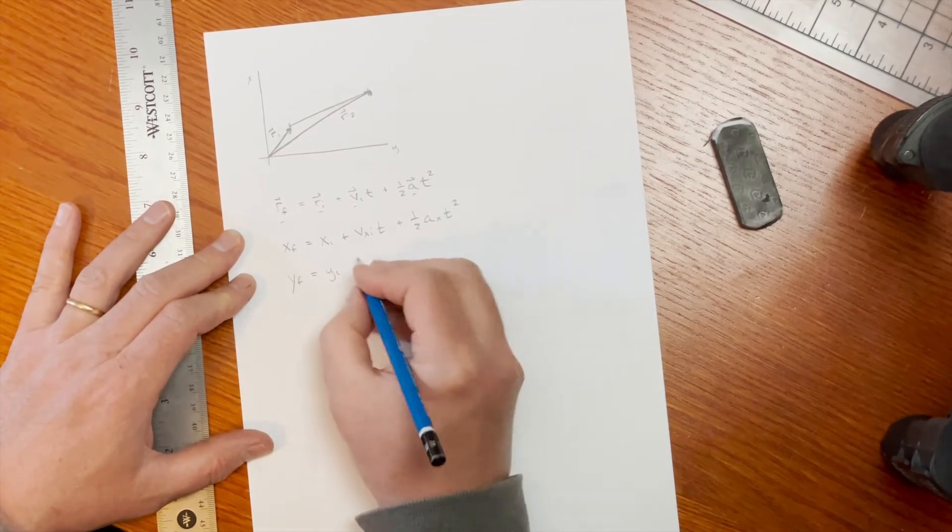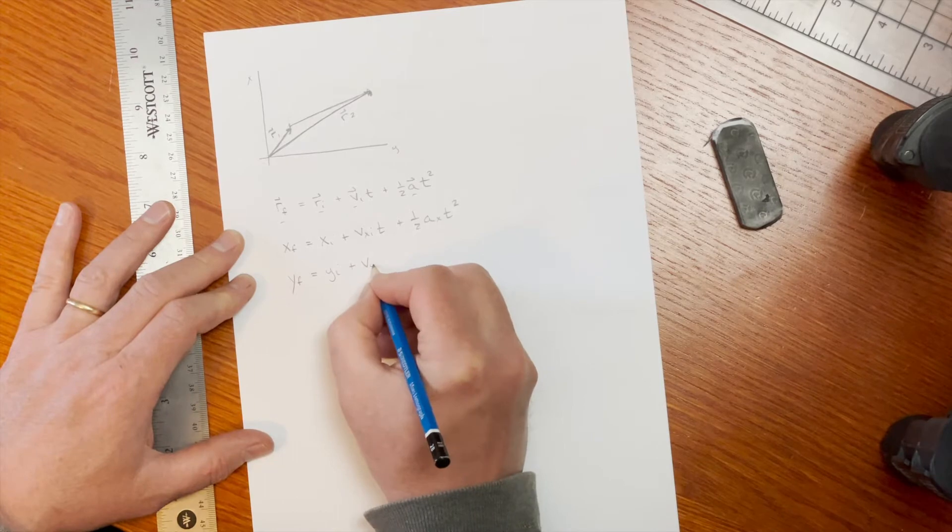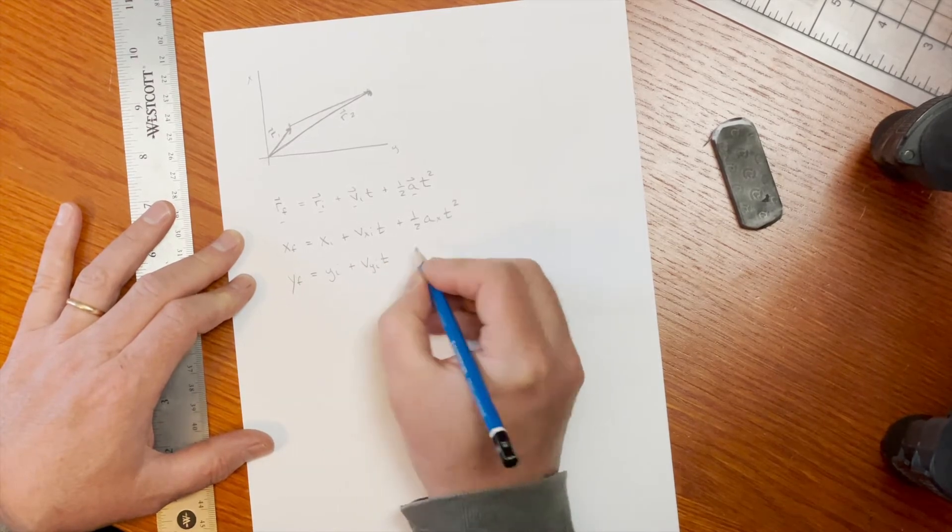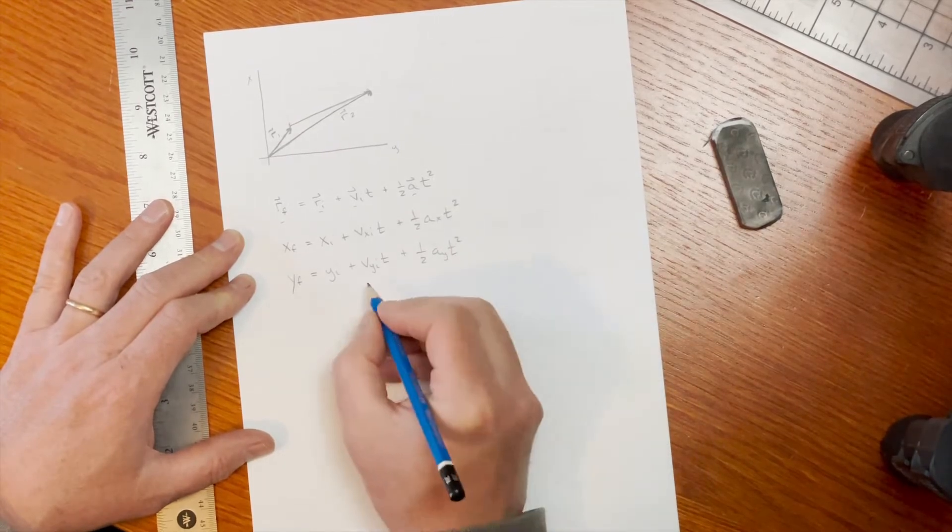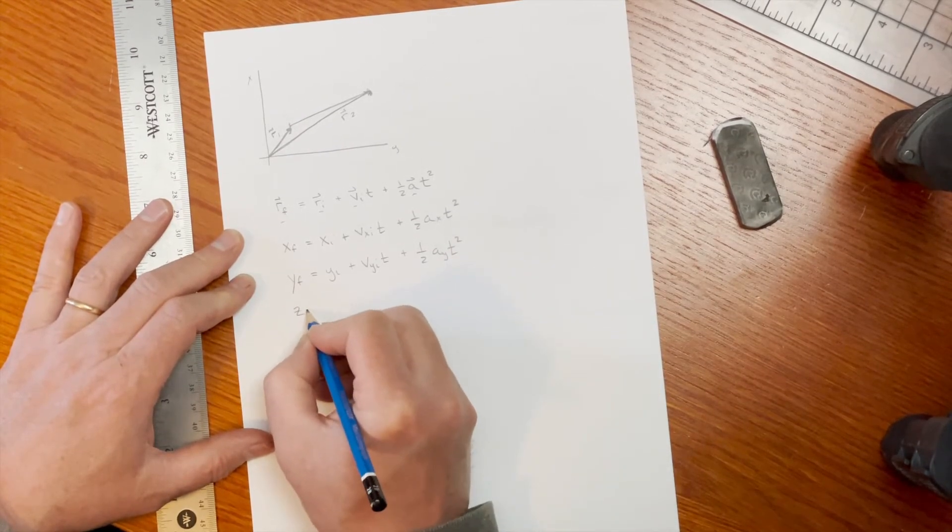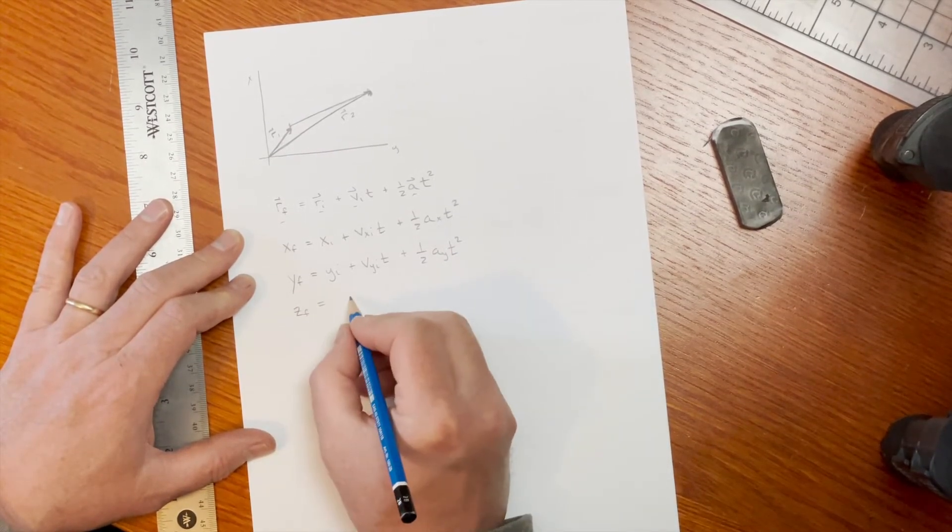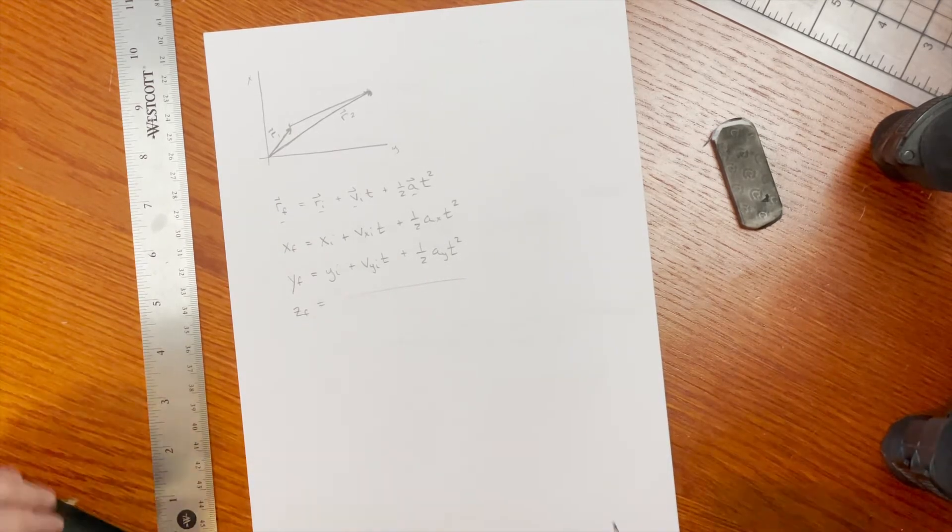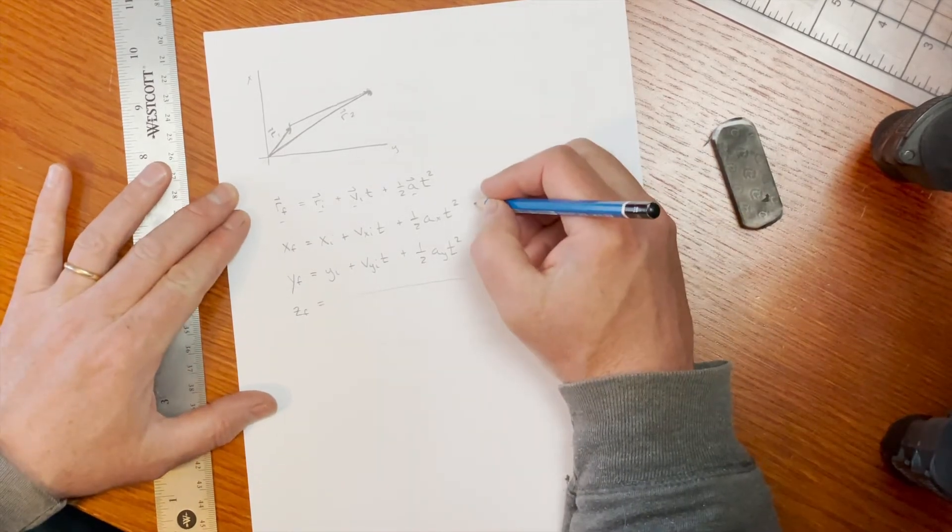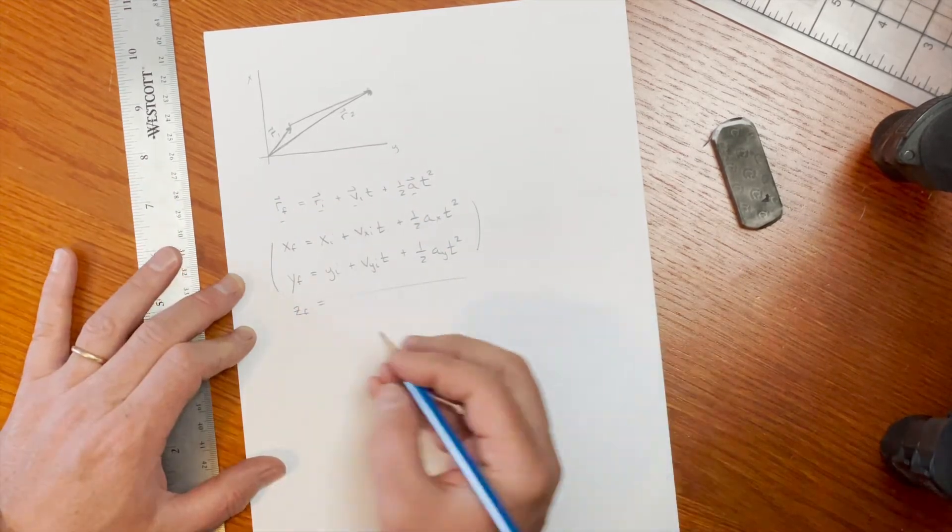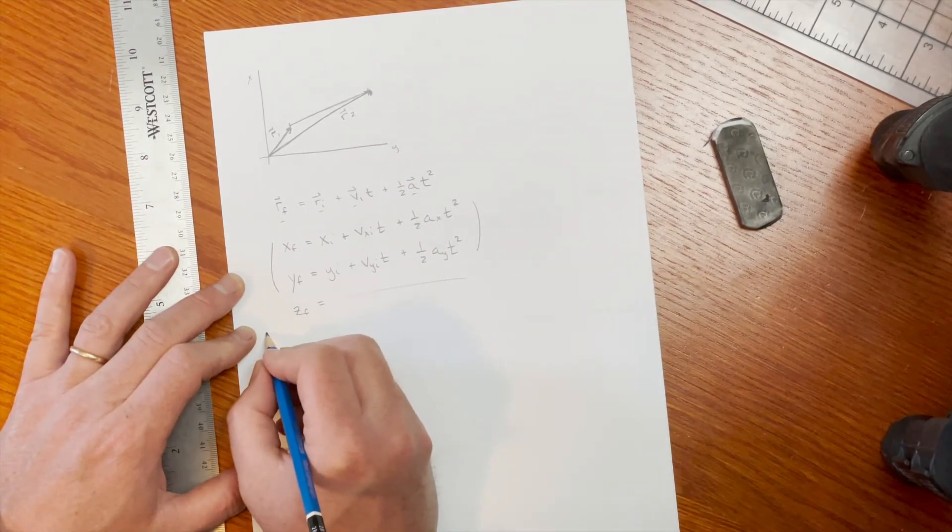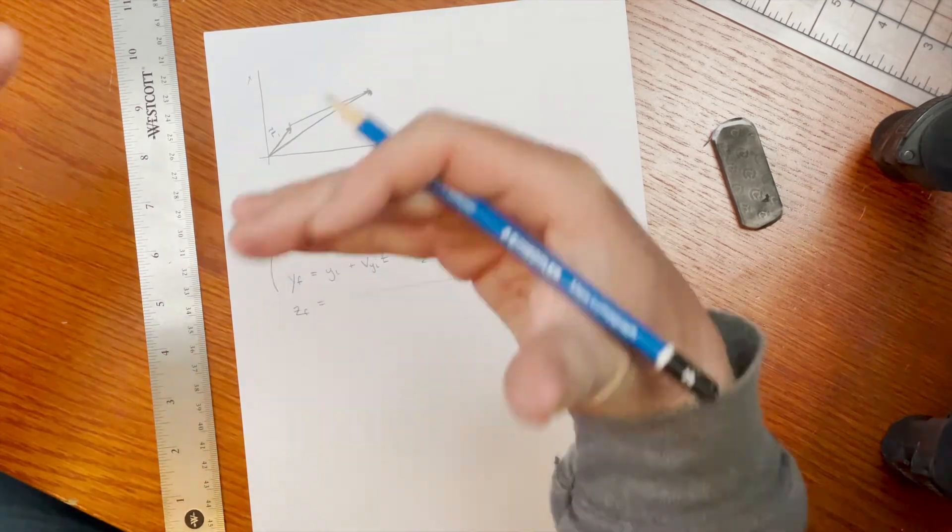Right, and I can then write down my z dimension as well if we have one. Okay, so this gives you a way of discussing the motion in more than one dimension. One of the applications for this is projectile motion, or predicting where things are going to be when they're thrown through the air.